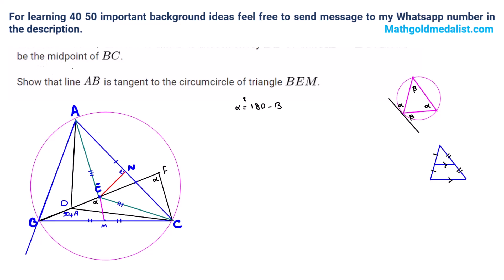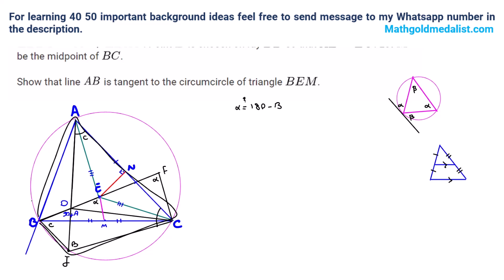If we extend line AD to intersect the circumcircle, because this angle is C, we can say this corresponding inscribed angle is also C. We can connect this intersection point — let's call it J. Then this angle is B, and because this angle is 180 minus A and the angles in this quadrilateral sum to 360, with B and C already accounted for, this remaining angle has to be A. So in this cyclic quadrilateral, the angles sum to 360.